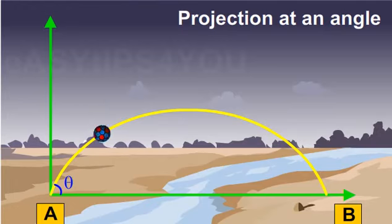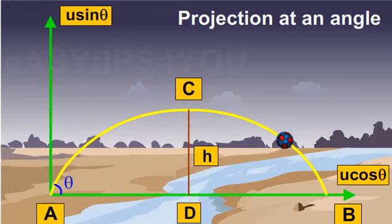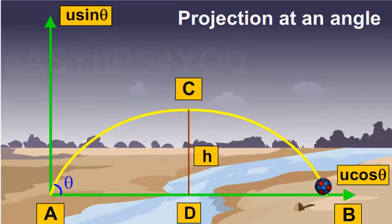The initial velocity can be resolved into two components: the horizontal component u cos θ and the vertical component u sin θ. The path of the projectile ACB is a parabola, and CD, i.e., the height, is the maximum height reached by it.